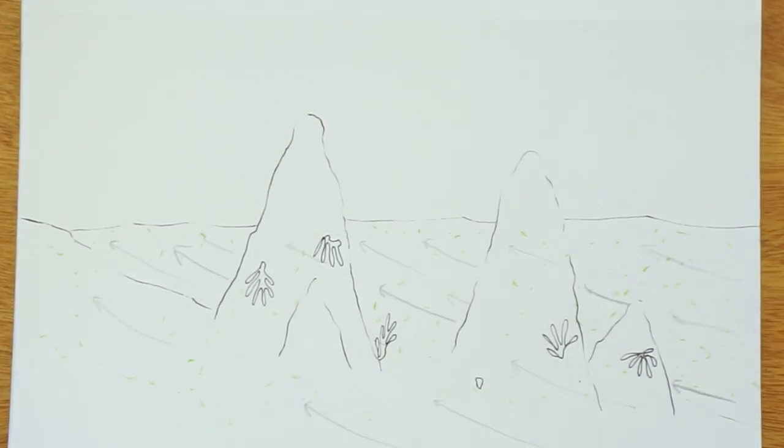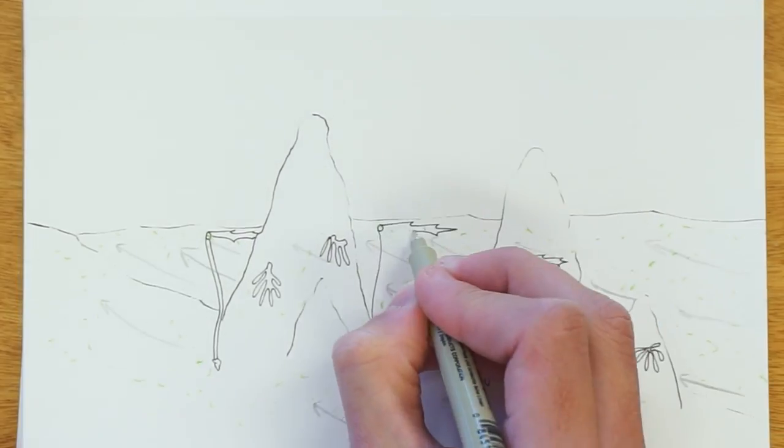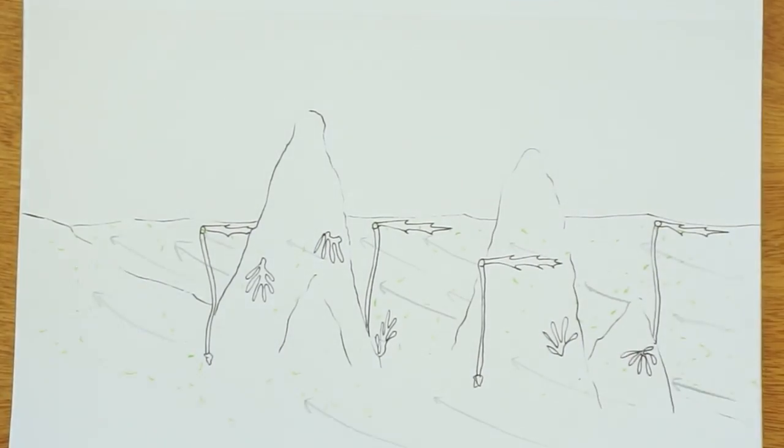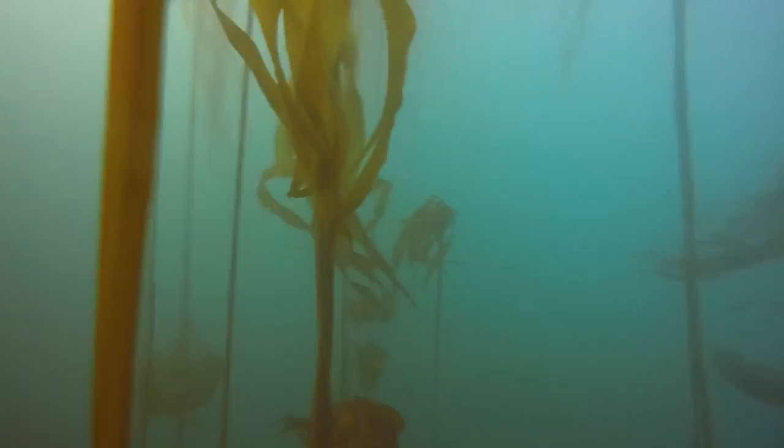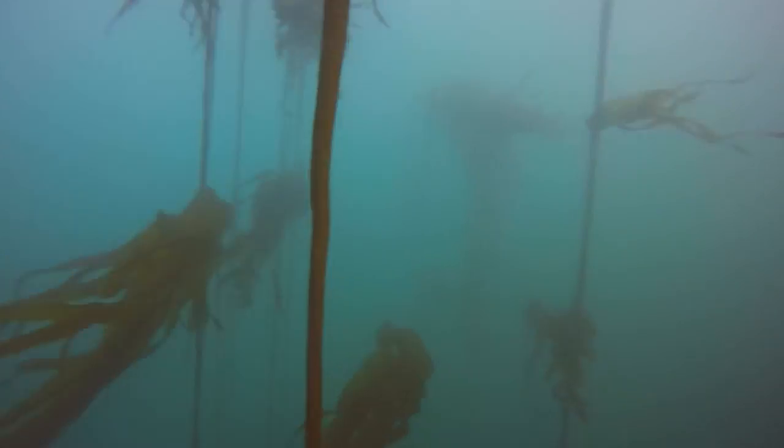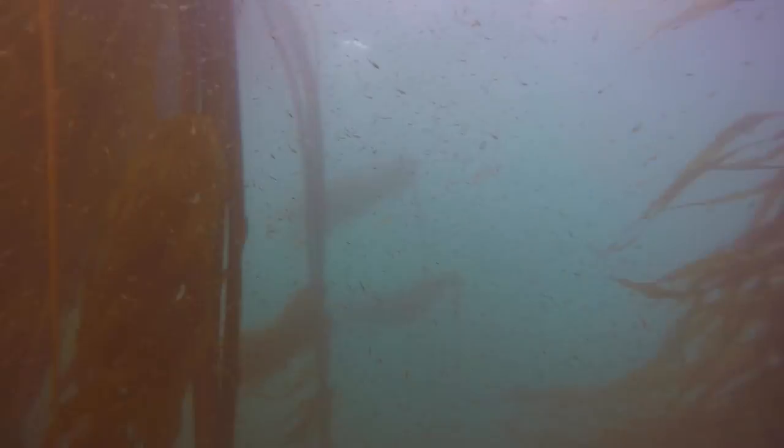Probably the most important of these is bull kelp, the world's fastest growing plant. When conditions are right, they can grow up to 10 inches or 25 centimeters in a single day. Bull kelp basically acts as the trees of an underwater forest.